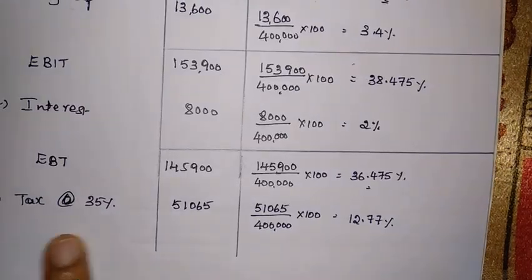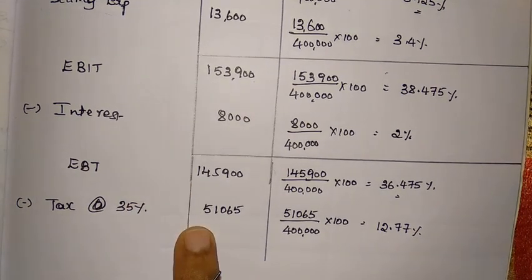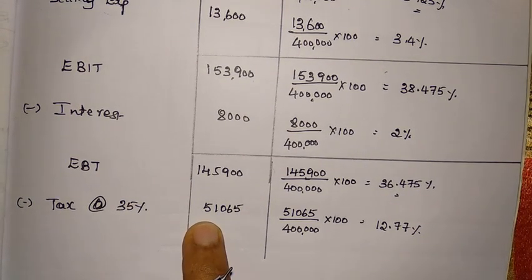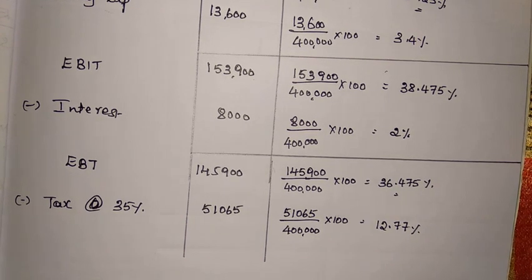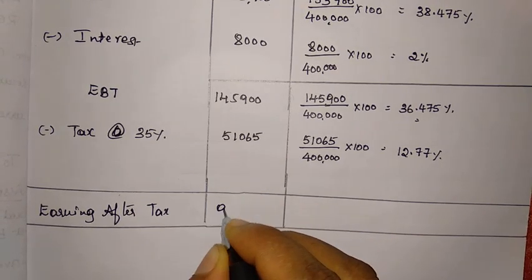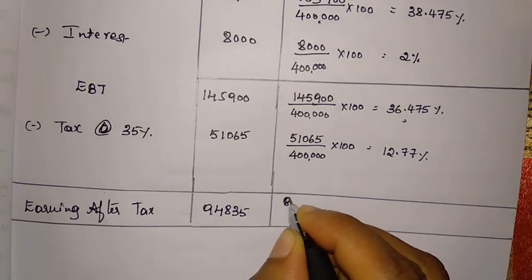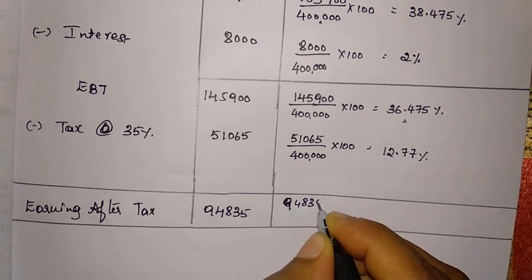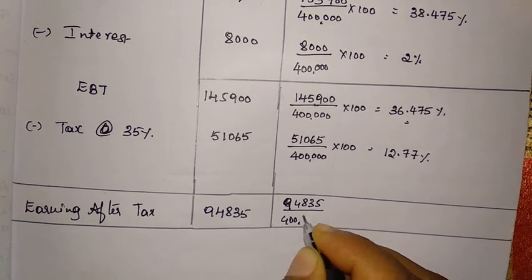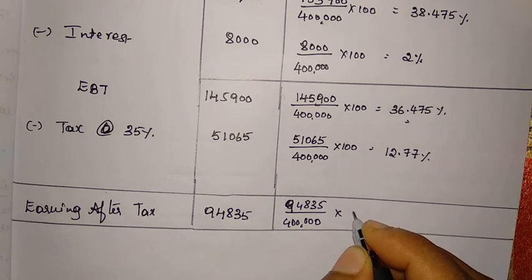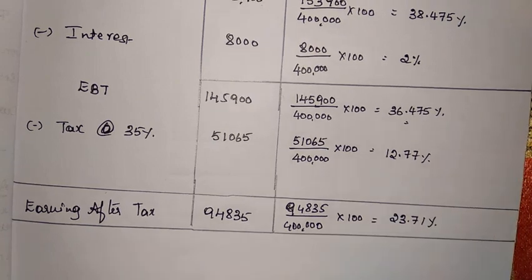Tax at 35% on operating profit is 51,065, and its percentage to sales is 12.77%. Profit after tax is 94,835. Profit as a percentage of sales: 94,835 divided by 4 lakh into 100 gives 23.71%.